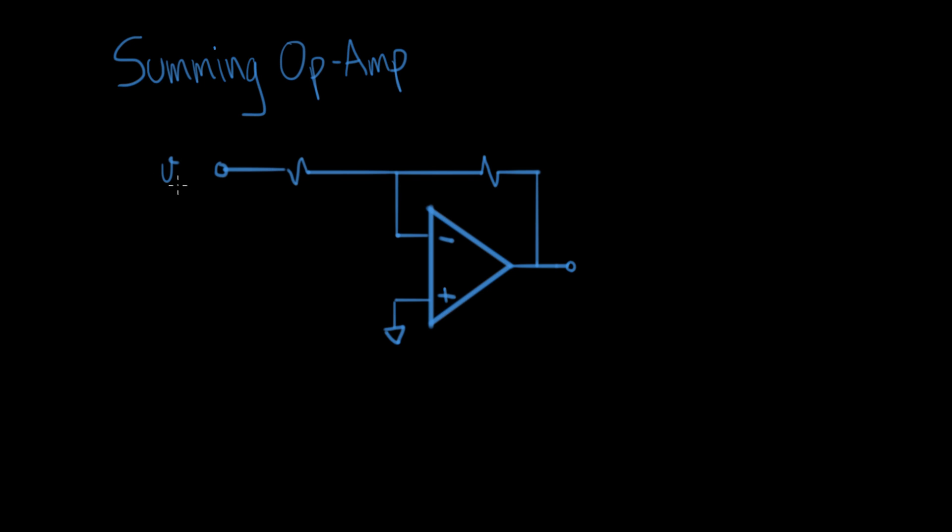What's drawn here now is an inverting op amp circuit with a single input. We'll call this VA for now, and we have Vout. We worked out how this worked before, where Vout was a function of VA times the ratio of these two resistors.